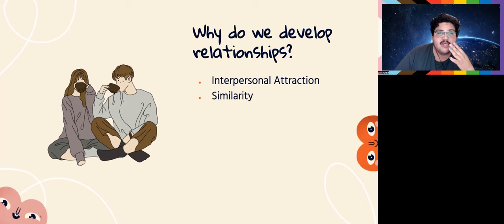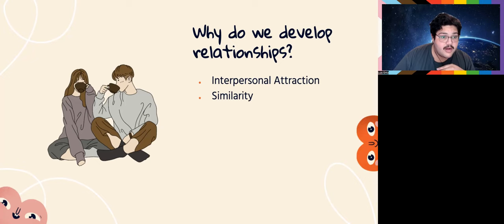We're also attracted to people because of similarity. We want to get into relationships with people who are similar to us — if they're into video games, art, movies, books, or if they believe the same things as you. For example, if you're both at an organization about wildlife protection, you might make a friend because you share that interest.